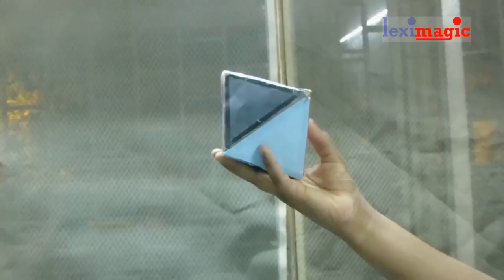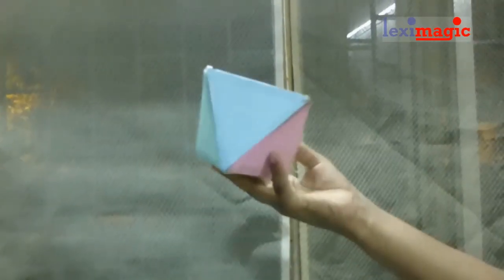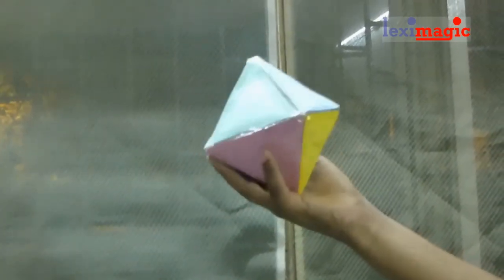The next is the octahedron which has eight faces, each of them being an equilateral triangle and it has six vertices.